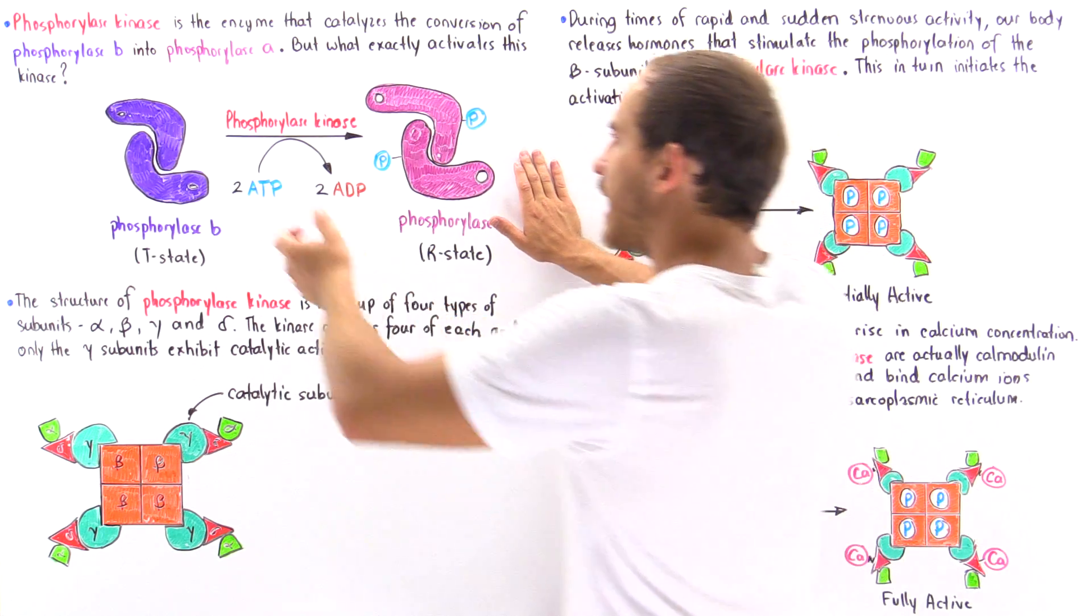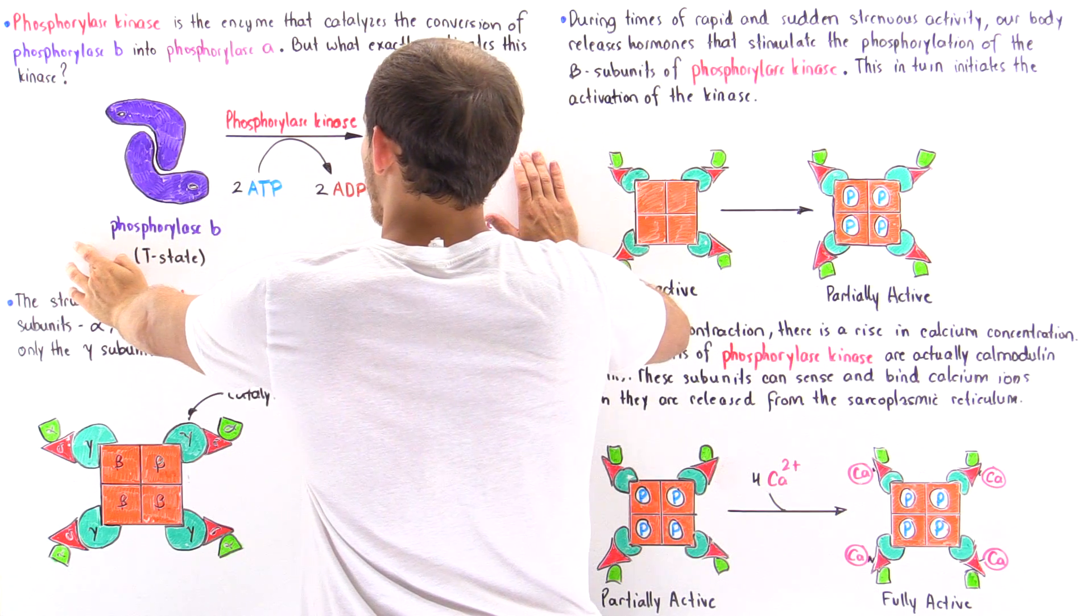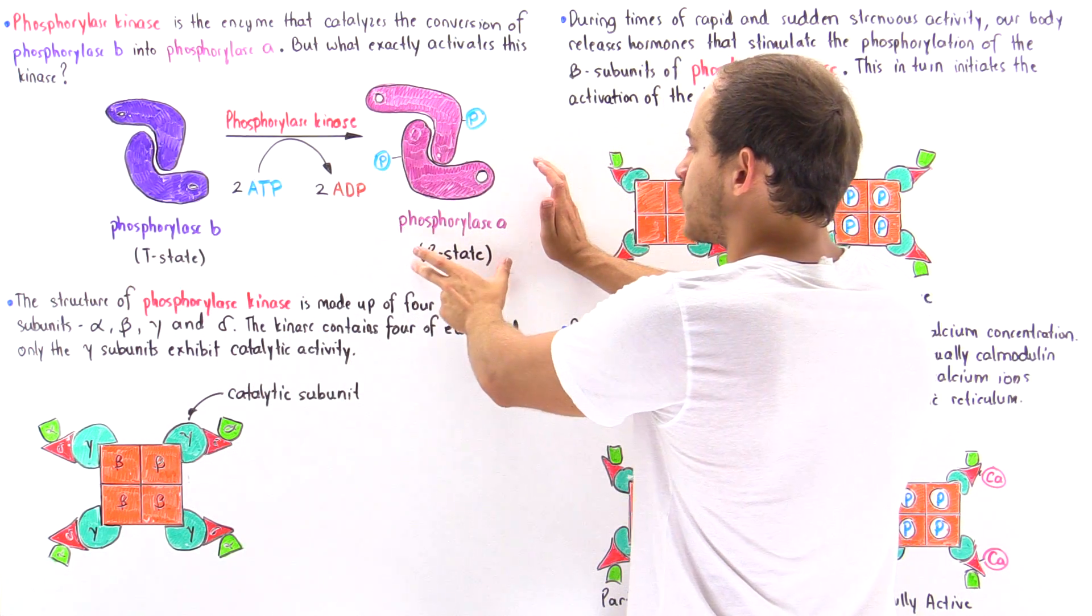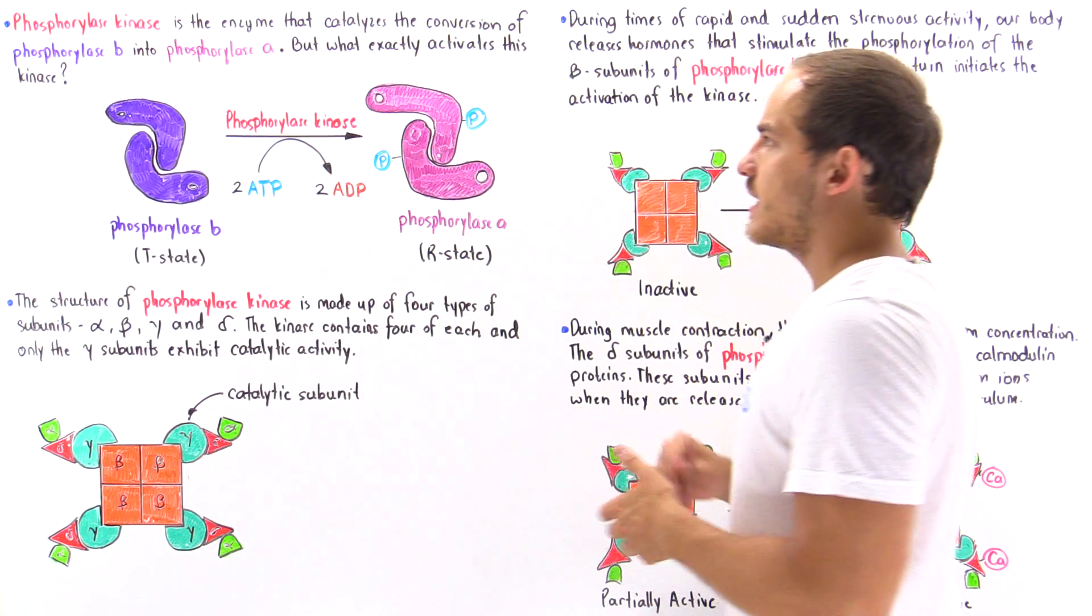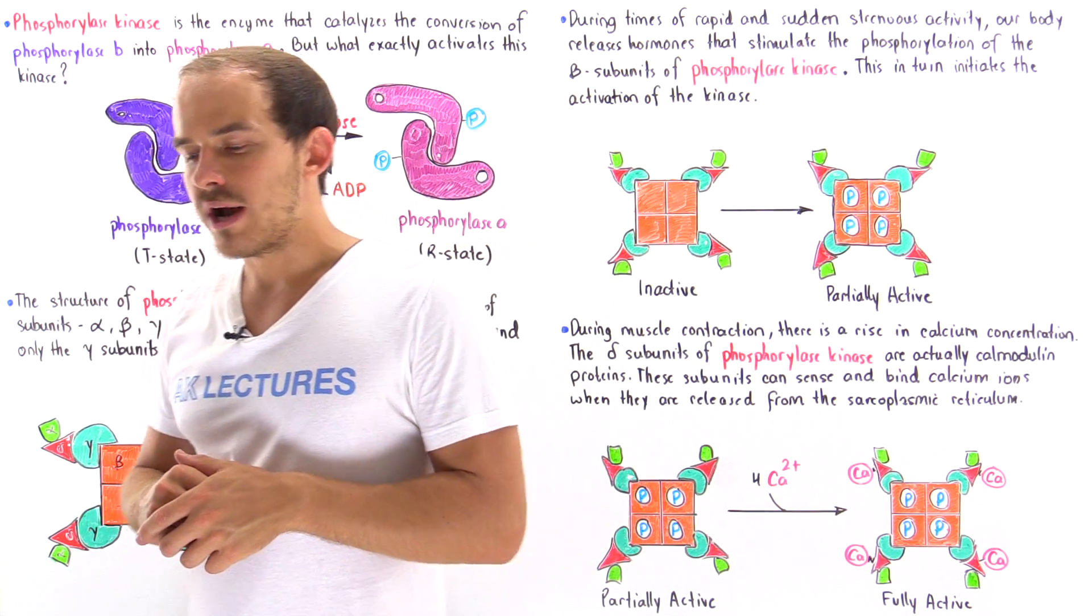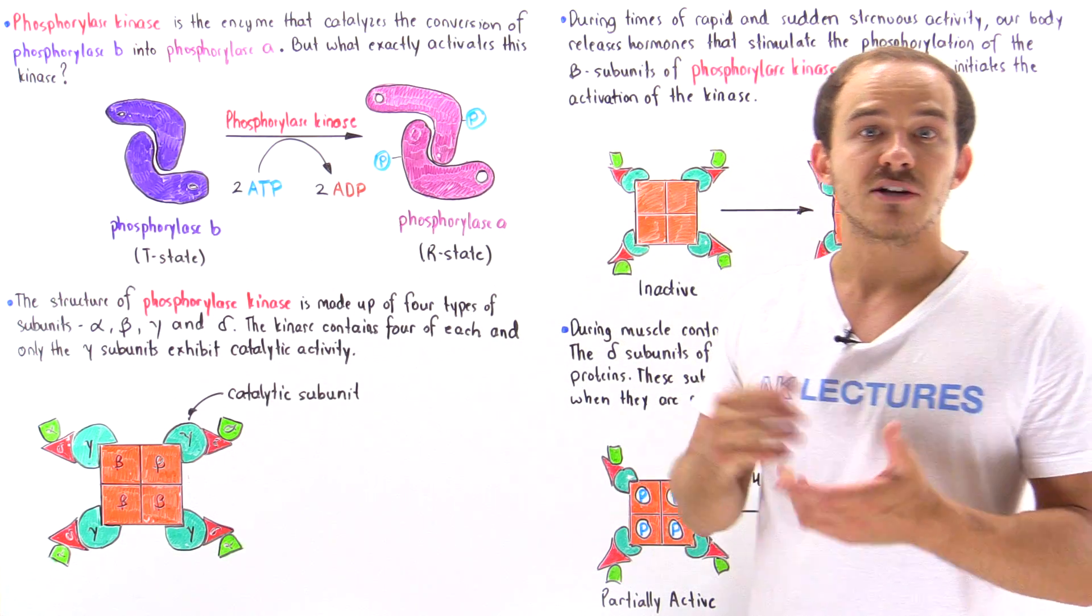So once again, phosphorylase kinase is the enzyme that catalyzes the conversion of phosphorylase B in the T state into phosphorylase A, which predominates in the R state. But what exactly activates this phosphorylase kinase? Well, before we look at that question, let's actually discuss what the structure of phosphorylase kinase actually is.